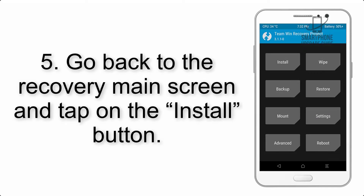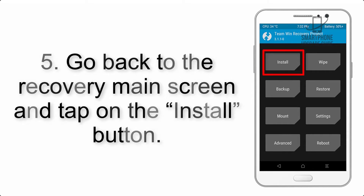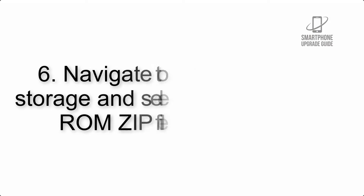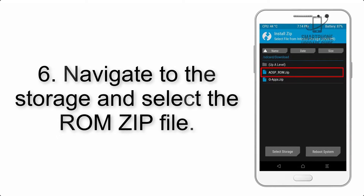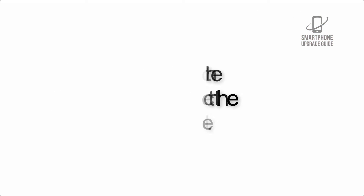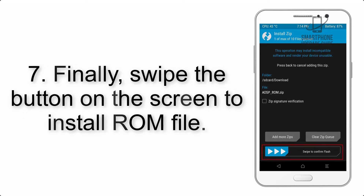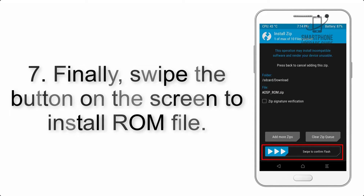Step 5: Go back to the recovery main screen and tap on the Install button. Step 6: Navigate to the storage and select the ROM zip file. Step 7: Finally, swipe the button on the screen to install the ROM file.